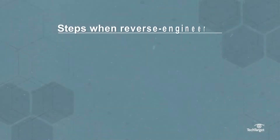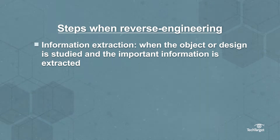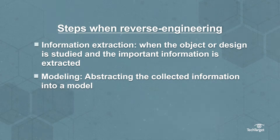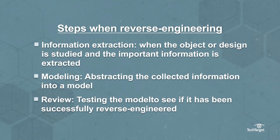There are generally three steps when reverse engineering. First, information extraction — when the object or design is studied and the important information is extracted. Second, modeling — abstracting the collected information into a model. And third, review — testing the model to see if it has been successfully reverse engineered.